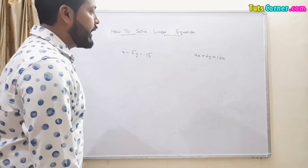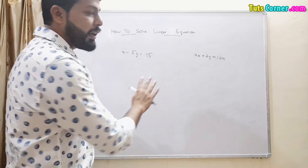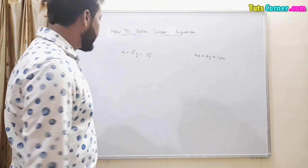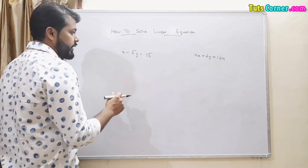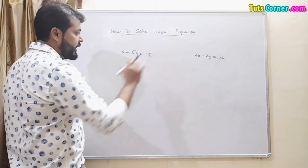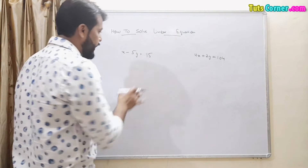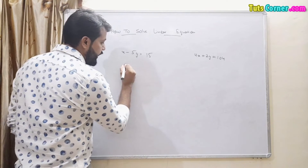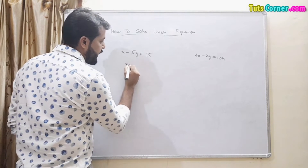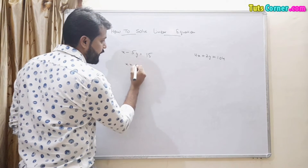Now we see how to solve linear equations with two variables. For this we need at least two equations. For example, we take two equations, and from the first equation we calculate either the value of x or y.